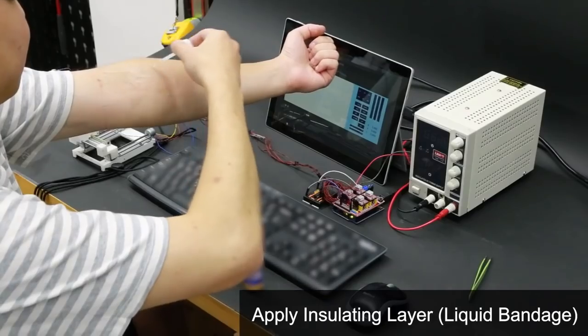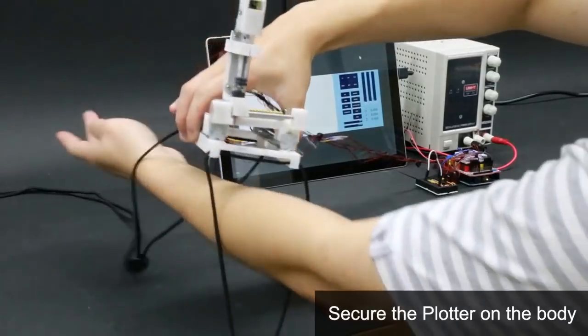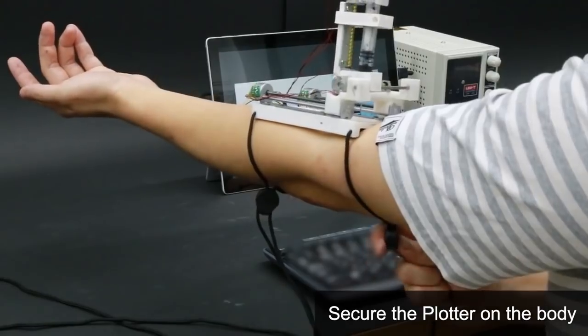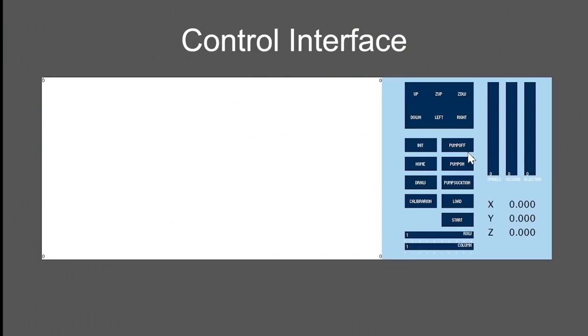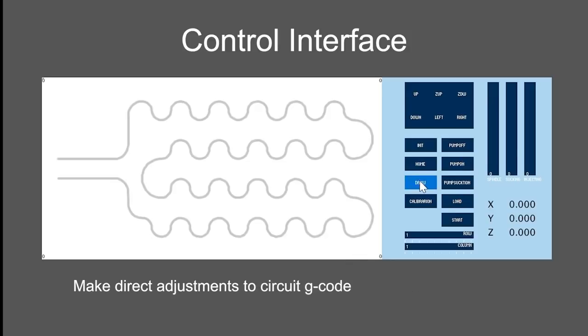Printing on the body involves first insulating the skin and fastening the plotter. Next, run the control interface and load the circuit to be printed.